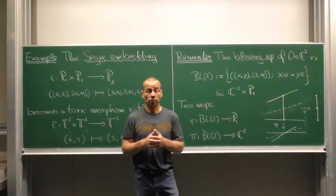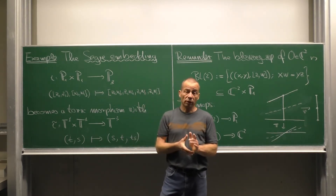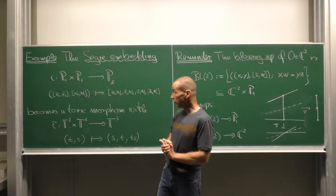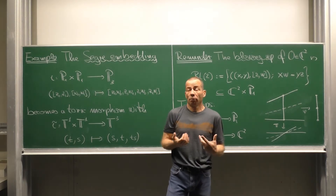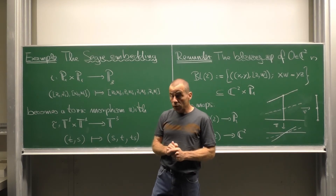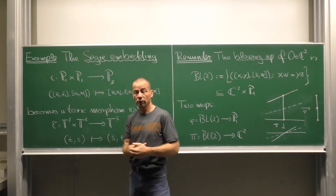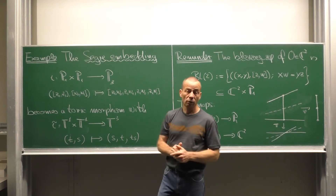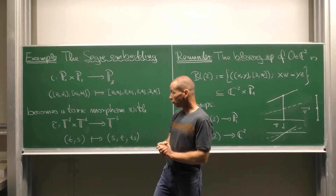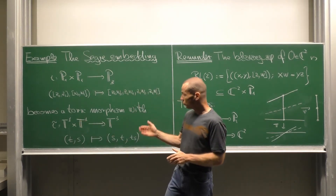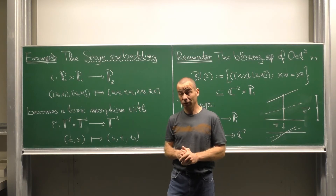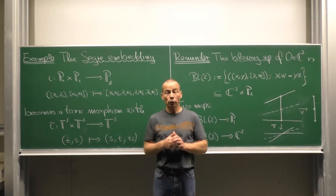Here is an example from classical algebraic geometry. The Segre embedding realizes P¹ × P¹ as a surface in the projective space P³. It is a monomial map, and these monomials arise by regarding one factor as a column vector and applying it to the other regarded as a row vector. The Segre embedding is a toric morphism. We need the accompanying homomorphism of tori: it goes from T¹ × T¹ to the three-torus and sends (t, s) to (s, t, ts). This works out — it is indeed a toric morphism.